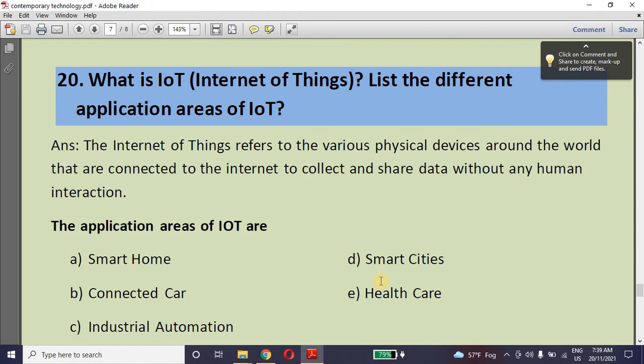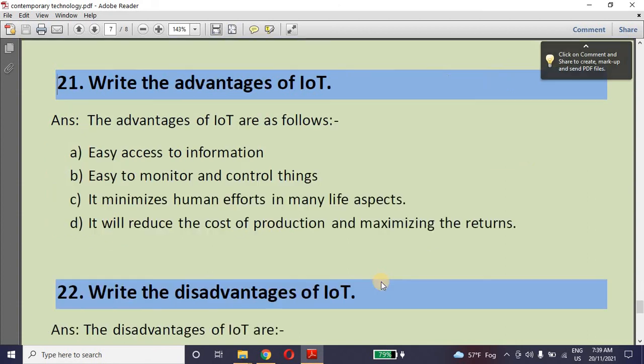Next note, internet of things. This is the last topic of contemporary technology. Application areas of IoT, in which field it is used? At home, car, for smart cities, and then after healthcare, hospital, and industries. Advantages of IoT.